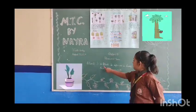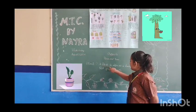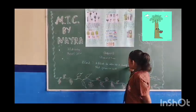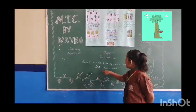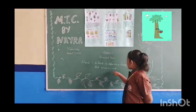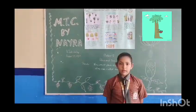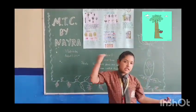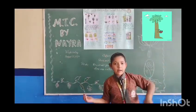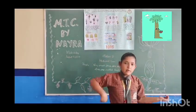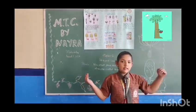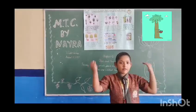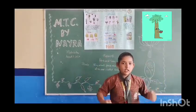A plant is defined as a living thing that grows on earth. We get fruits, vegetables, medicines, plants, paper, wood, etc. from plants.